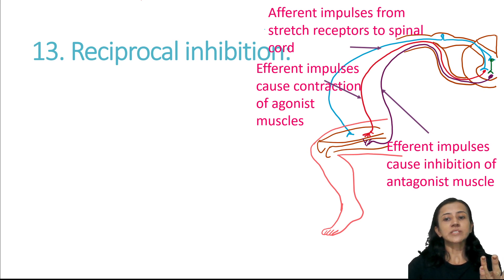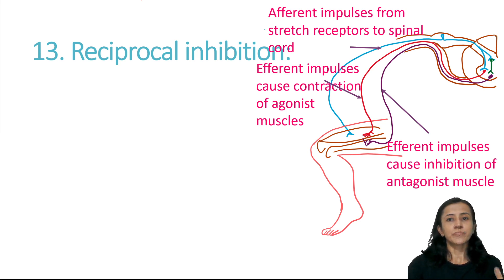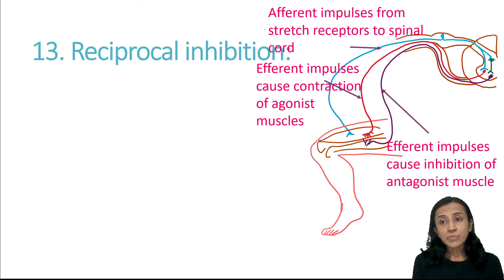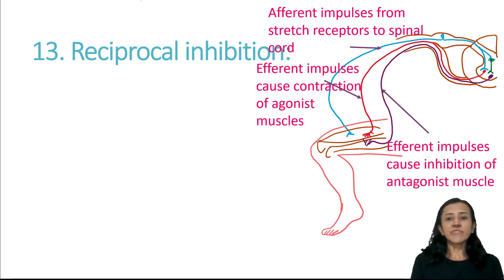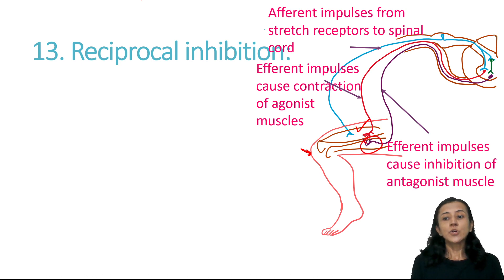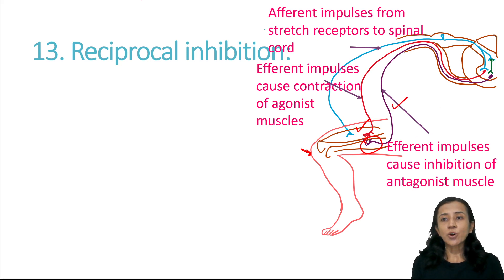Reciprocal inhibition: a sensory input stimulates excitatory neurons of one group and inhibitory neurons of another. For example, in the knee reflex, sensory fibers cause extension of the limb by stimulating extensor muscles (quadriceps) while inhibiting flexion muscles — that is reciprocal inhibition of opposite muscle groups, mediated by inhibitory interneurons.